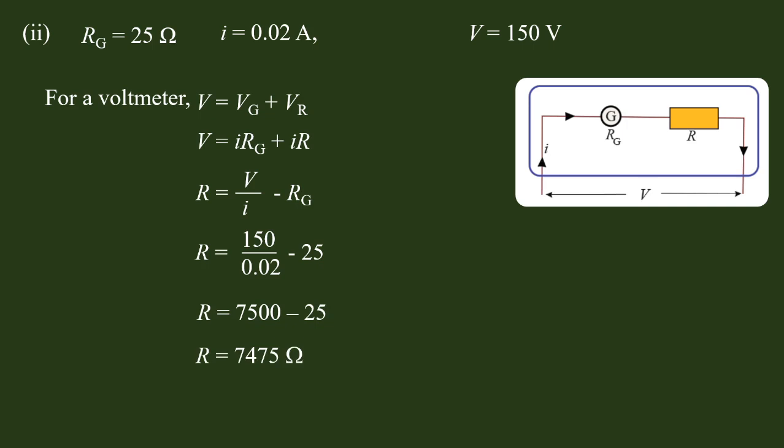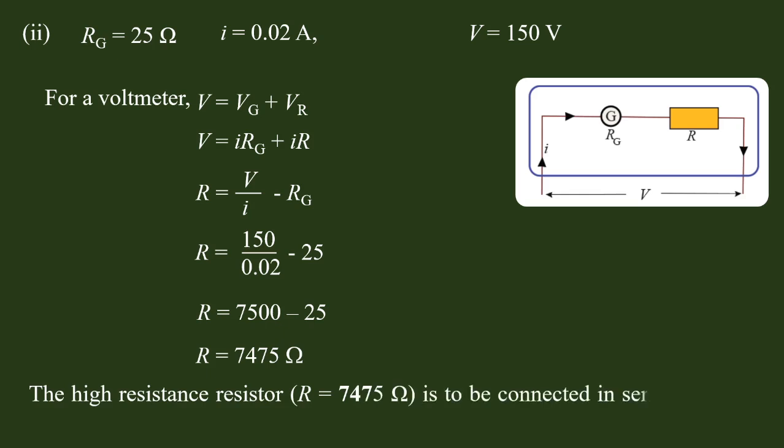The potential difference of 150 volts gives us the voltmeter calculation. The high resistance R equal to 7475 ohms is to be connected in series with the galvanometer coil of resistance R_g.